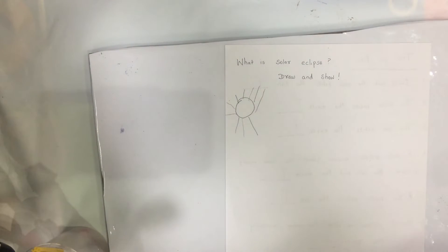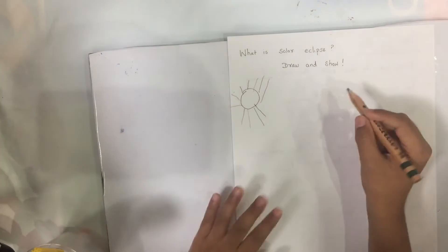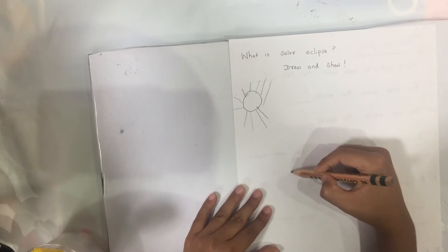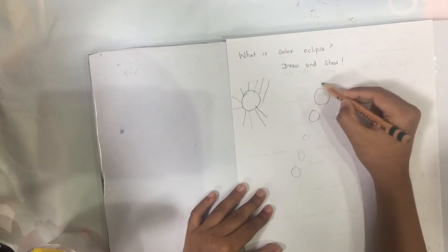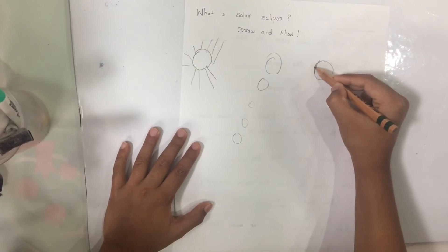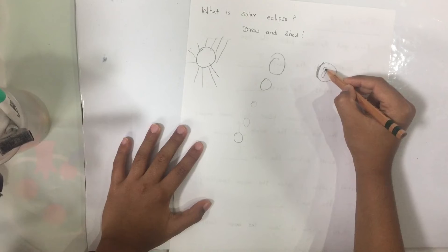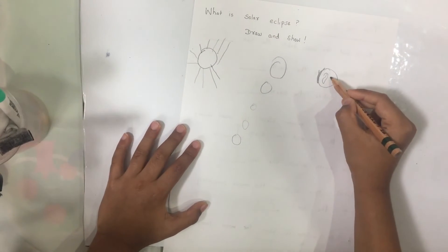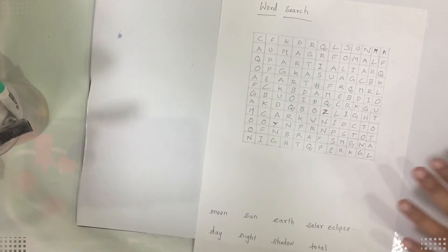I'm going to draw about this solar eclipse. Your sun always looks like a spider! Moon moves and comes right here. What is that? Earth — I can draw Africa if you can.